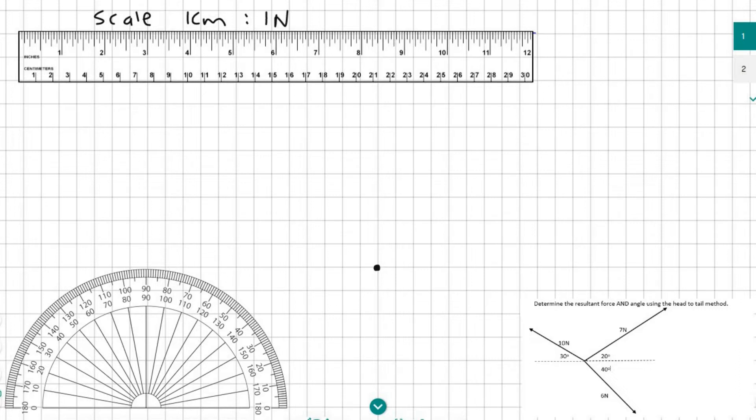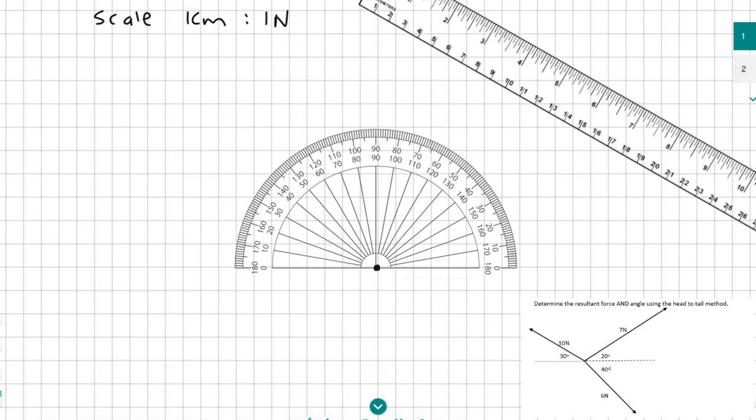Next you need to choose a force, either the 10, the 7 or the 6. It doesn't matter which one you start with. I'm going to start with the 10. So the 10 newton needs to be 10 centimeters long at an angle of 30 degrees. So I've gone ahead and I've placed my protractor on the little dot that I made and now I'm going to measure 30 degrees from the left hand side. So if I do that I will end up with a dot at 30 degrees, somewhere over there.